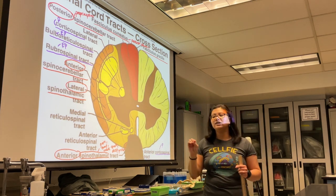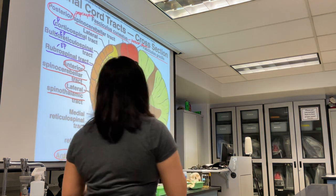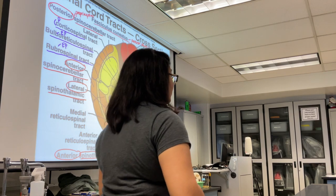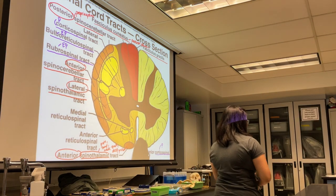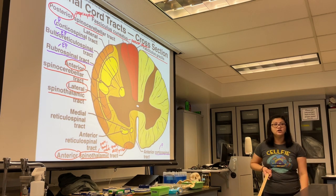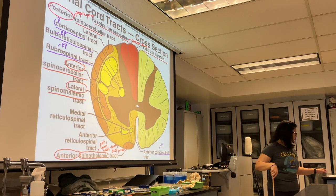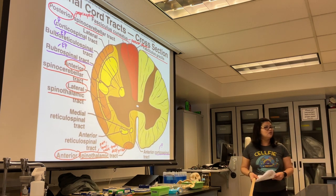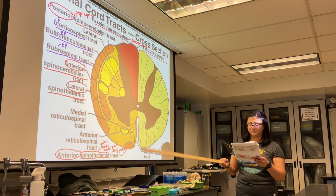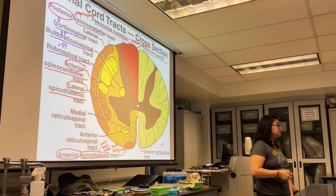The spinothalamic tracts deal with deeper sensations — the opposite of your posterior column. The posterior column handles fine touch, two-point discrimination, and light vibrations. The spinothalamic tracts, both lateral and anterior, are concerned with pain, temperature, crude touch, and deep pressure. If somebody punches you in the face, messages travel through those spinothalamic tracts.